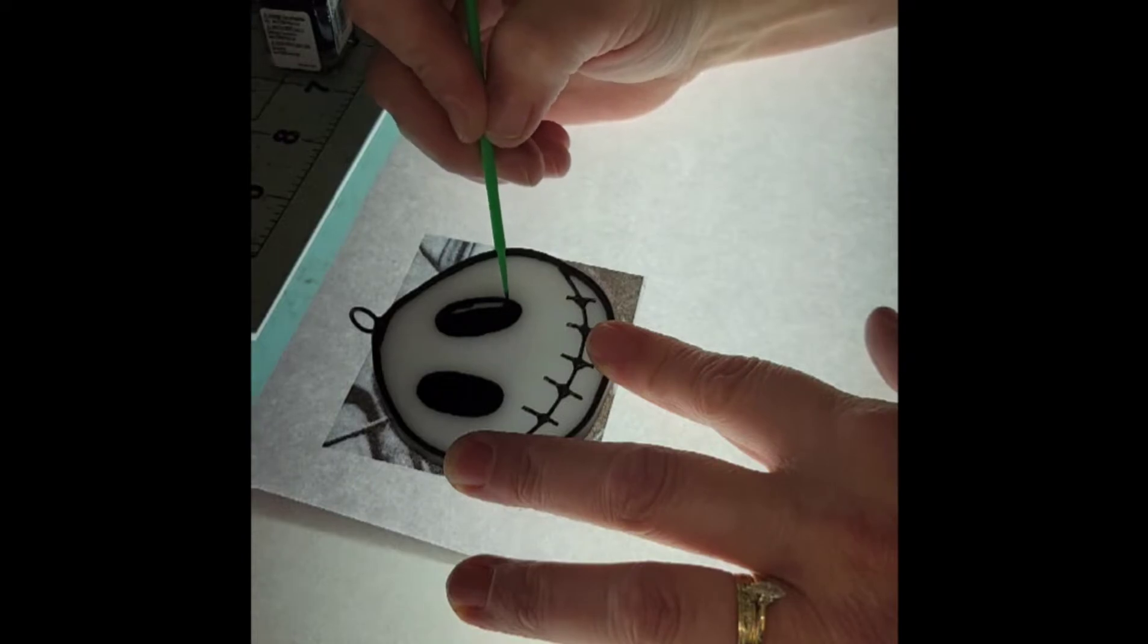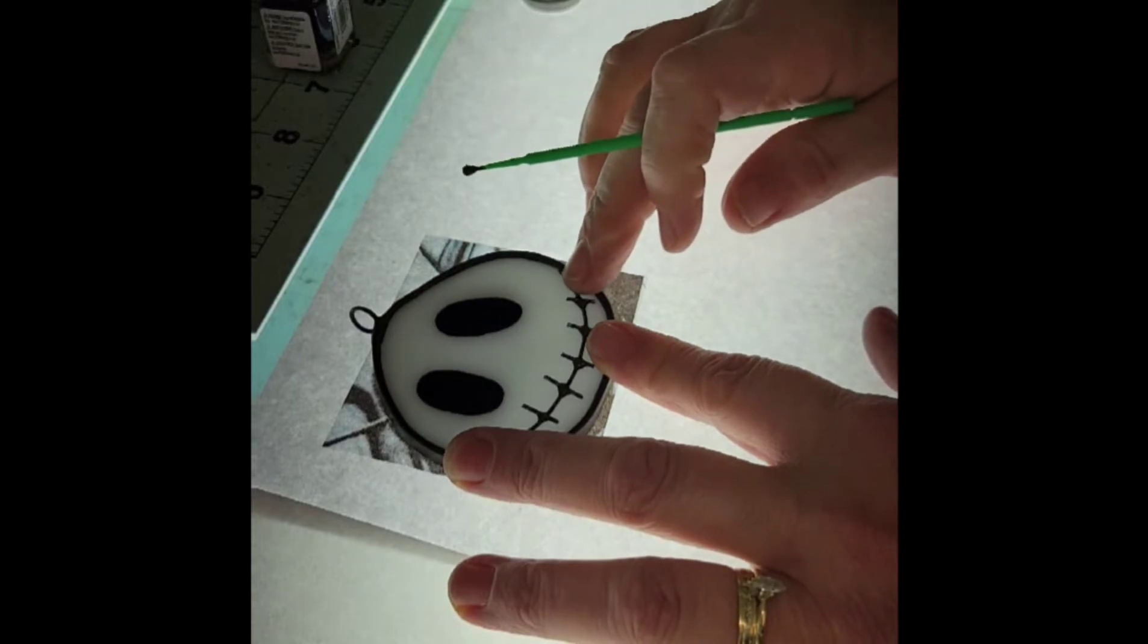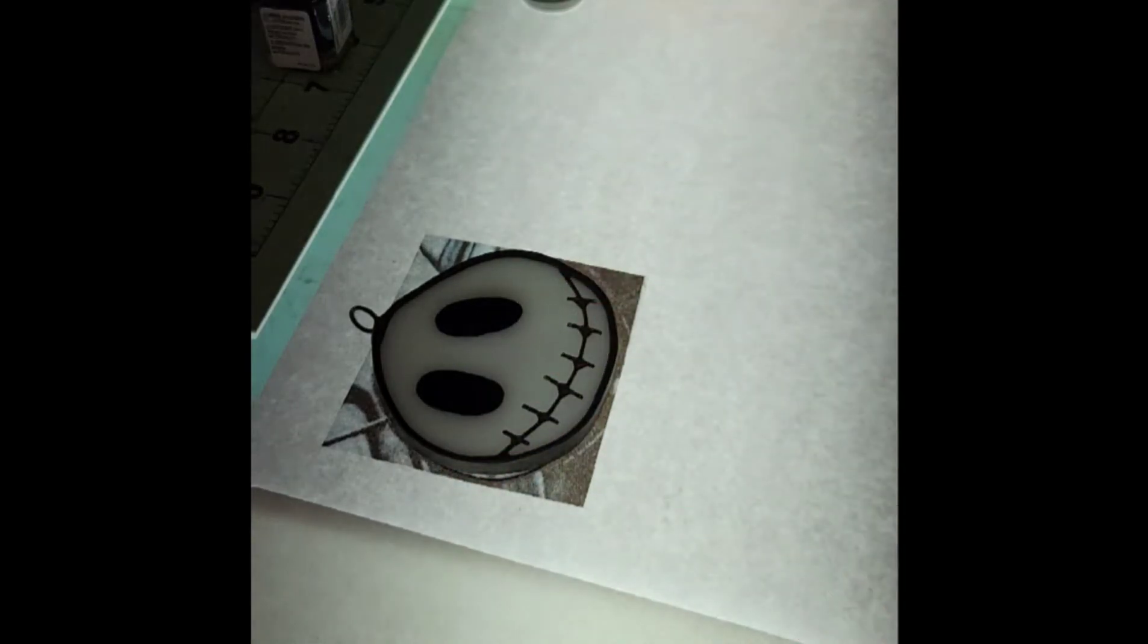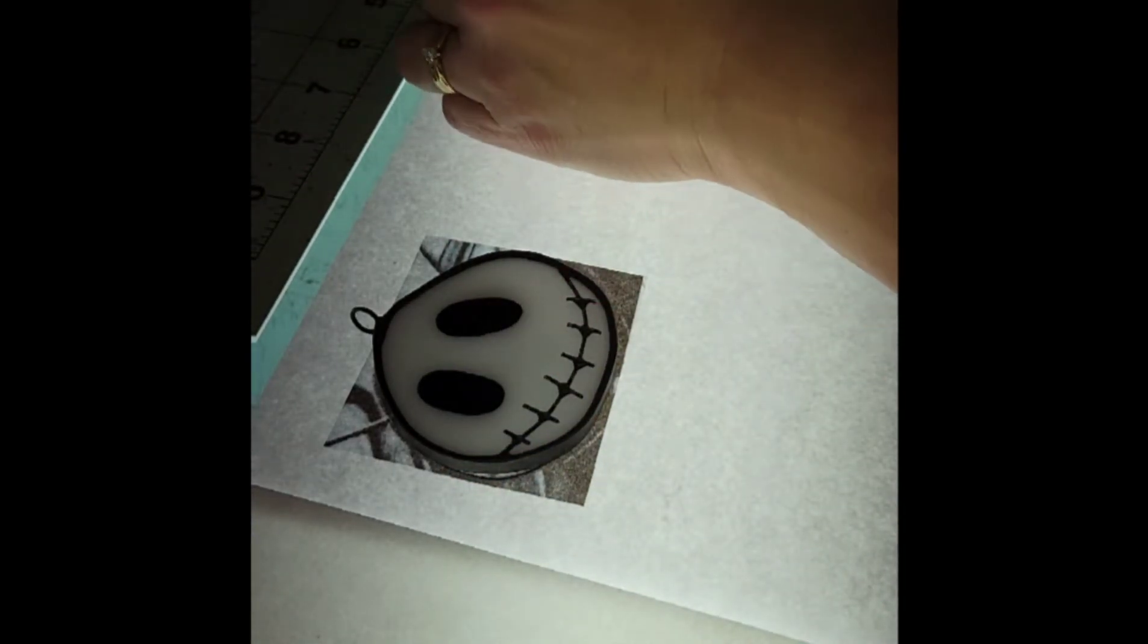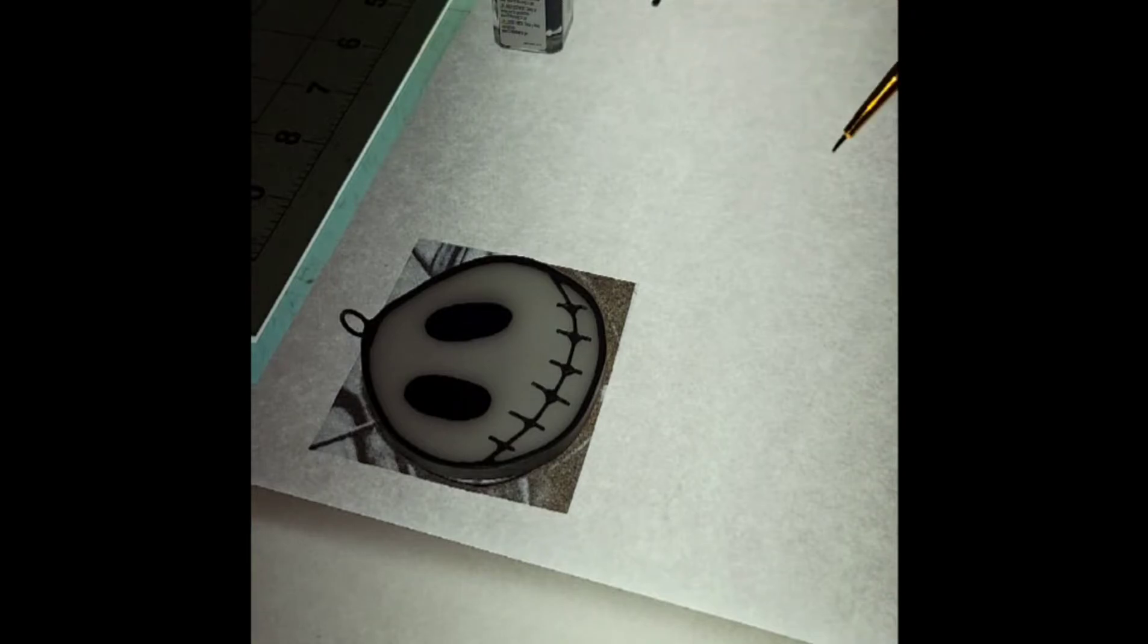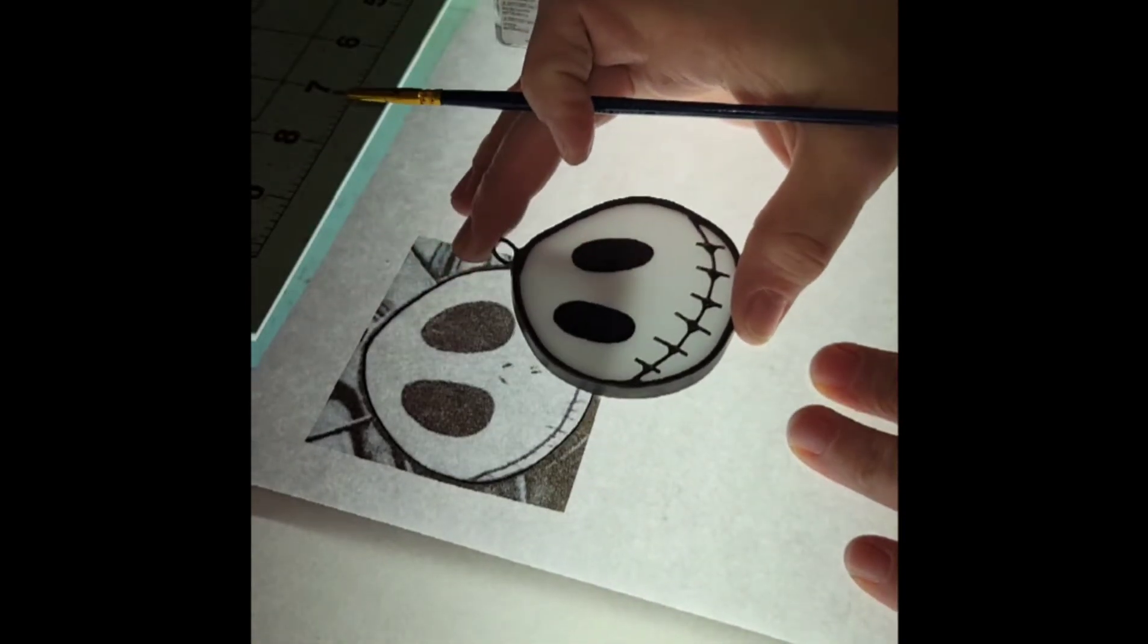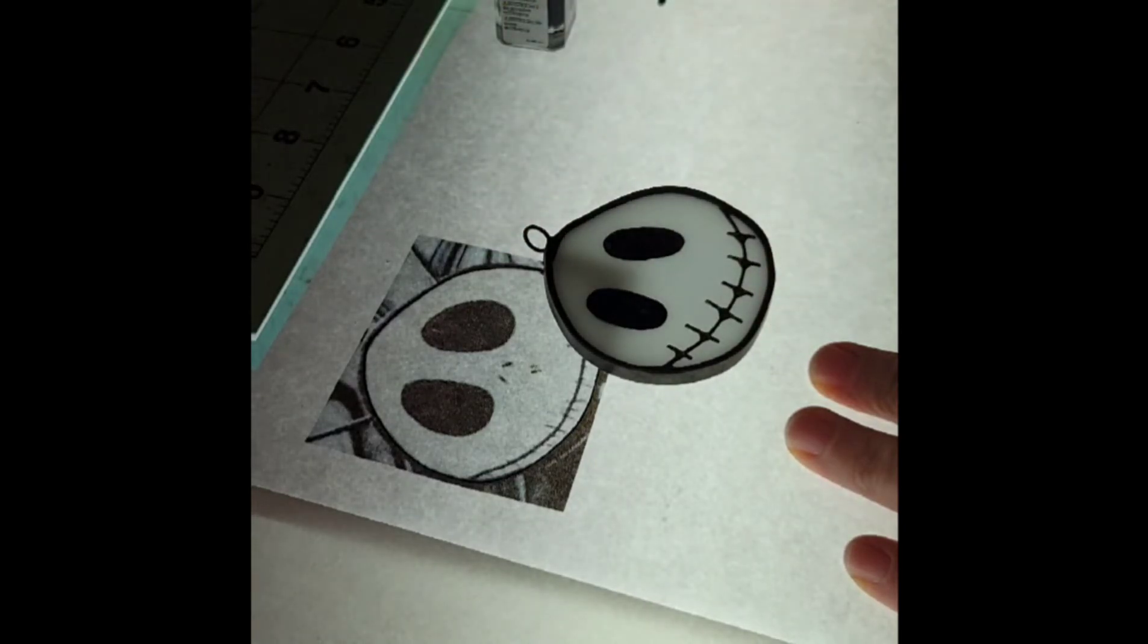So that you can't see light through it and it dries. Then for the nose, I'm gonna use a little bit of a smaller brush. The nose is so small I can't see it under there, so I'm gonna move it and just copy it as best that I can.